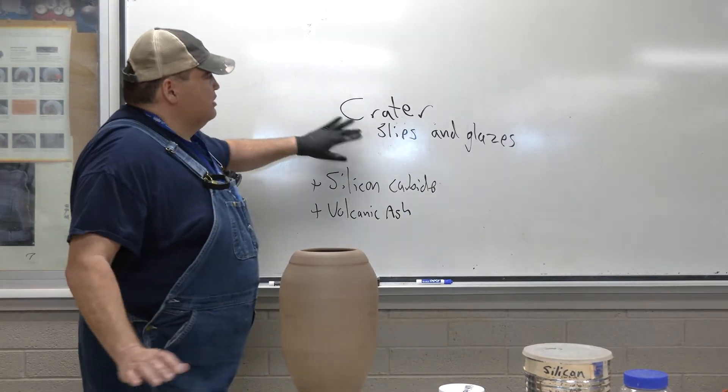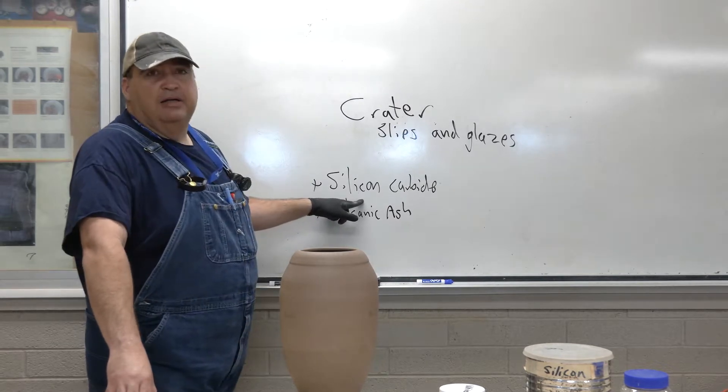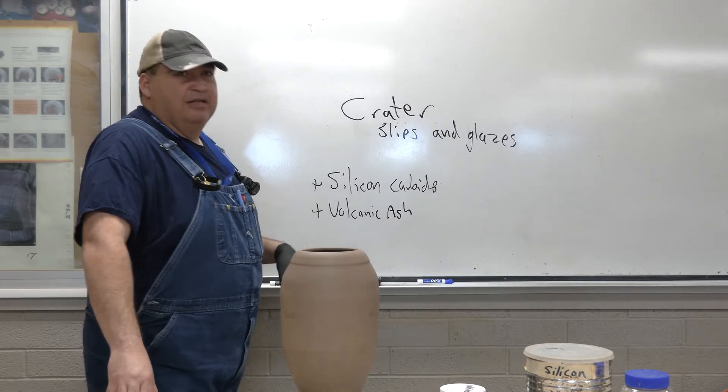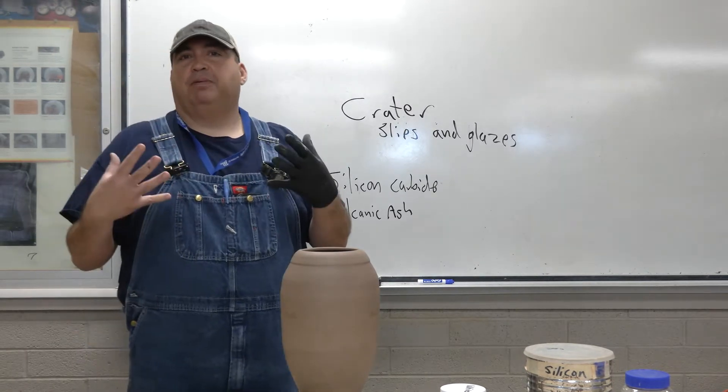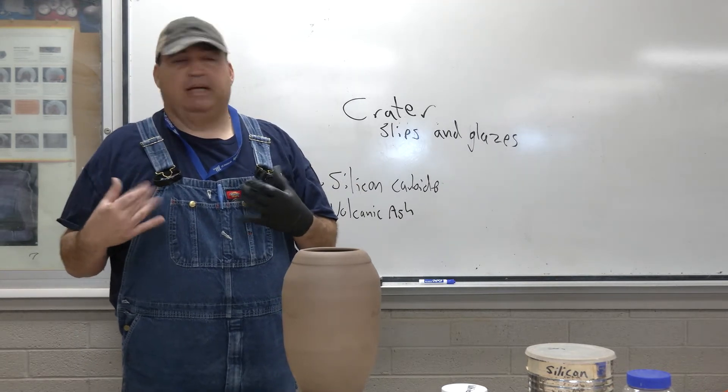With crater slips or glazes you use silicon carbide, and what happens to the silicon carbide is it fires, it bubbles up and creates craters on the surface of your piece.